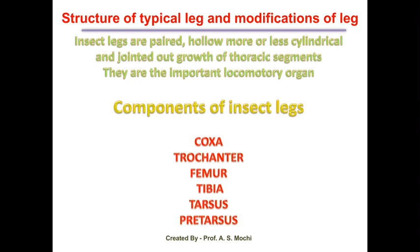Generally, the insect legs are paired and hollow, or more or less cylindrical and jointed outgrowths of thoracic segments. They are important locomotory organs. These three pairs of thoracic legs present on the thoracic region are the most important organs for locomotion.